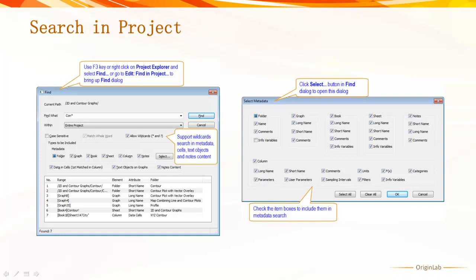In older versions, it's quite limited, only window names, labels, or folder names were searchable.